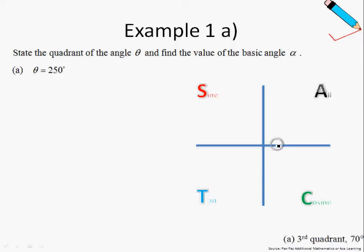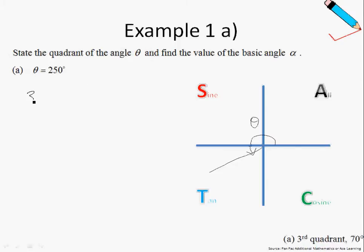Starting from here, we measure in an anticlockwise direction — 90 degrees, 180 degrees, and then before reaching the 270-degree mark, this is my theta. So this is theta, and as you can see, we are in the tangent quadrant, also known as the third quadrant. So theta is 250 degrees, so we are in the third quadrant.